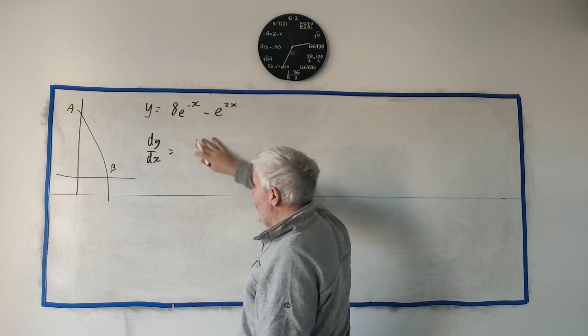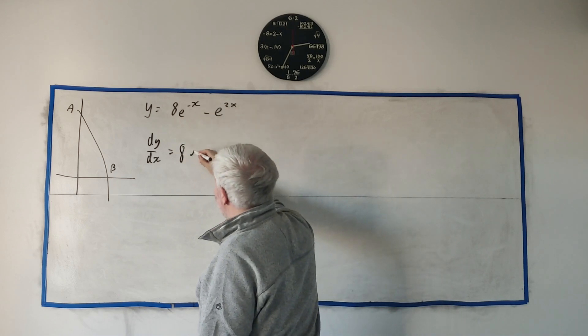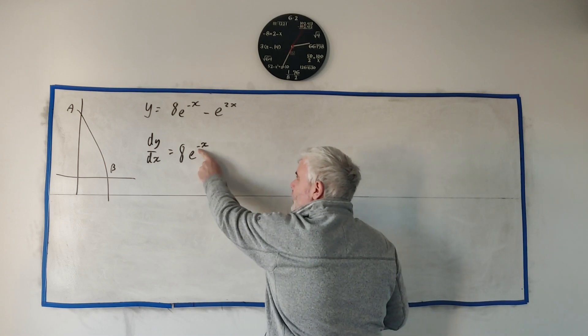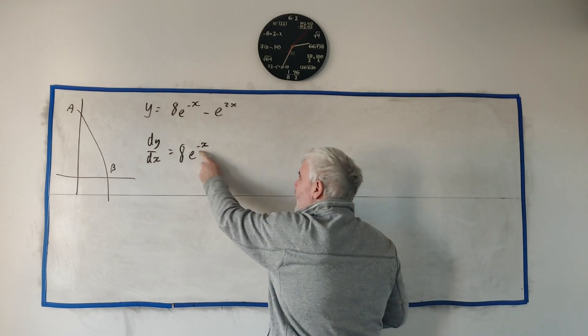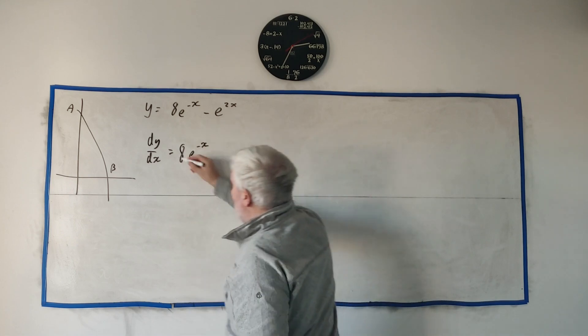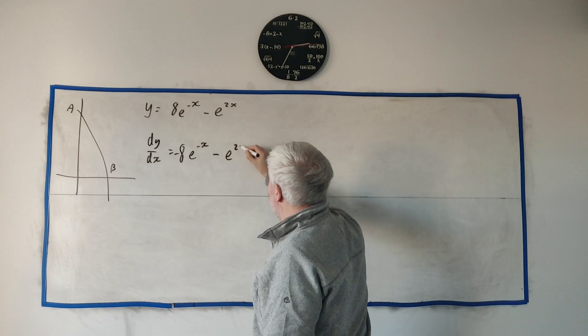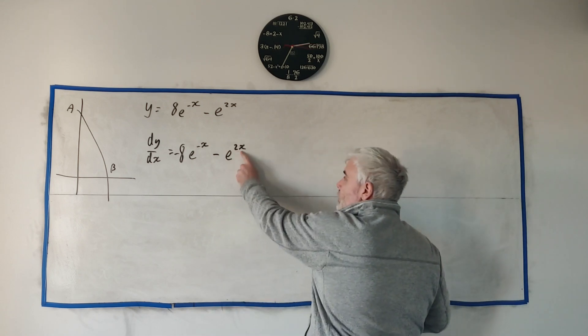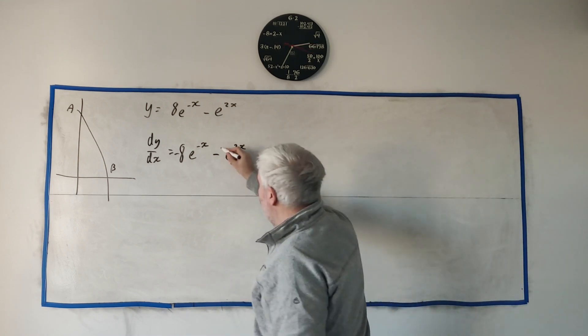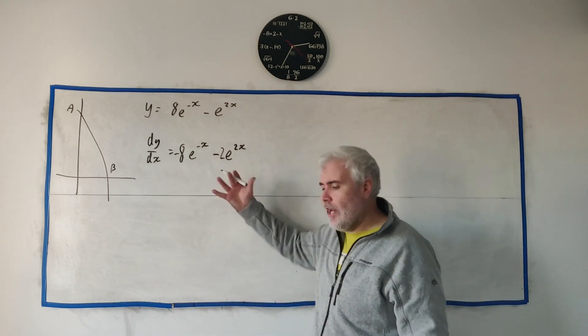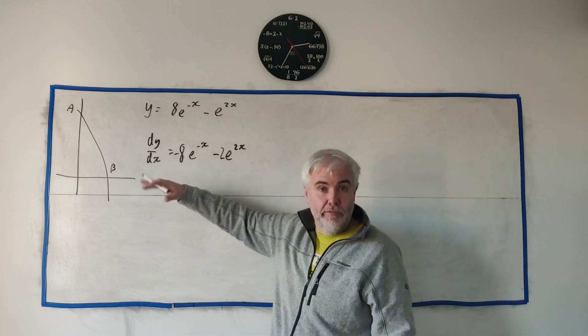To differentiate e to the power of anything it really mostly just stays the same. We just have to multiply by the derivative of what's up here and the derivative of this is minus 1. So it stays the same and we just multiply by the derivative up here and that's 2 in this case. So that's the general term for the derivative or the gradient.